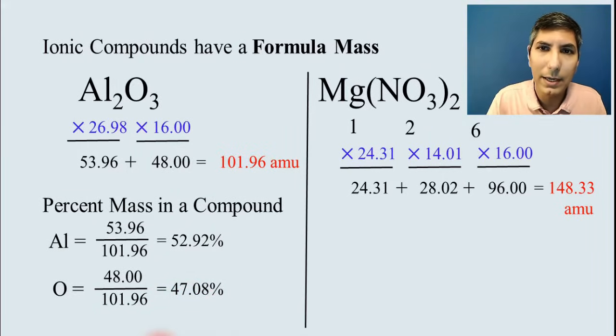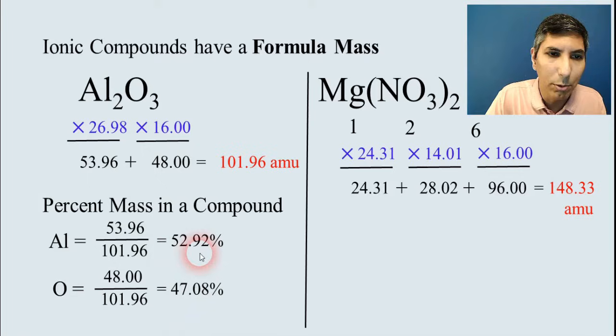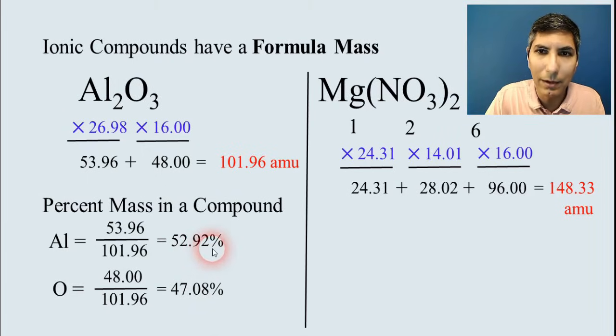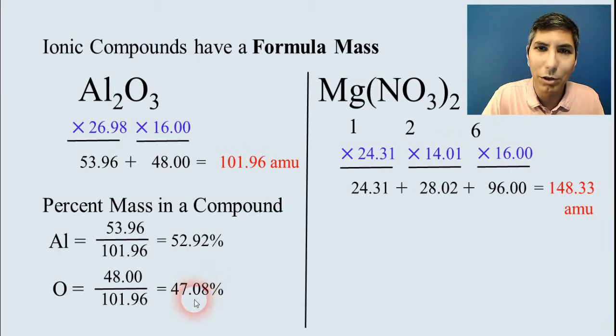That means if you have a sample of, let's say, 100 grams of aluminum oxide, 52.92 grams of that, 52.92 percent, would be aluminum, and the rest would be oxygen. So that's how we can determine the percent mass in a compound.